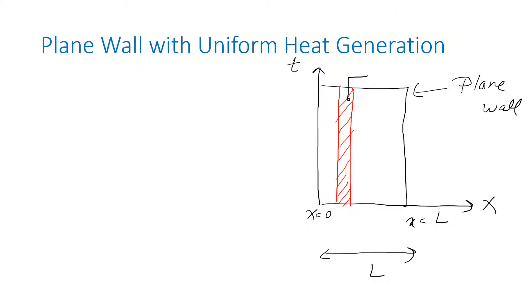The next topic is plane wall with uniform heat generation. In the image, the x-axis shows the thickness of the wall and the y-axis shows the temperature. L is the total thickness of the wall. We have taken an element at a distance x from the origin with some thickness dx. We are talking about heat generation, so there is a heat generation point inside the wall.